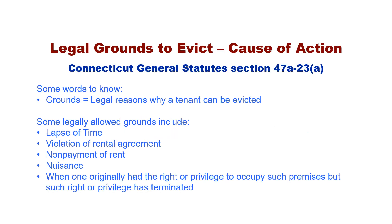Legal Grounds to Evict — Cause of Action. Connecticut General Statutes Section 47A-23 Subsection A lists legal reasons or grounds a summary process lawsuit can be based on. The grounds include, but are not limited to: Lapse of time, meaning the lease will be ending and not renewed; Violation of rental agreement, meaning the tenant violated some specific requirement in the lease agreement; Non-payment of rent, meaning the tenant has not been paying the rent agreed to in the lease; Nuisance, meaning the unreasonable or unlawful use of the property which causes damage or danger to tenants or the landlord.